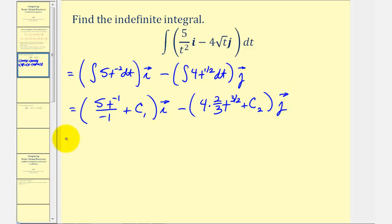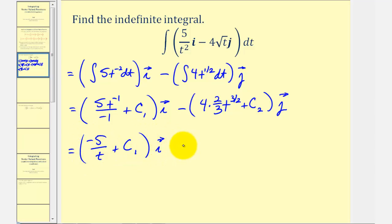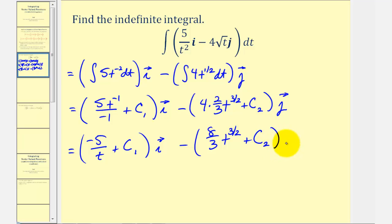Now let's clean this up. We have five divided by negative one, which is negative five times t to the negative one, or negative five divided by t, plus c₁ times i. Nothing simplifies in the second term, so we have minus eight-thirds t to the three-halves plus c₂ times j. Notice how c₁ and c₂ result in a constant vector, where the i component is c₁ and the j component would be negative c₂ because of the minus.